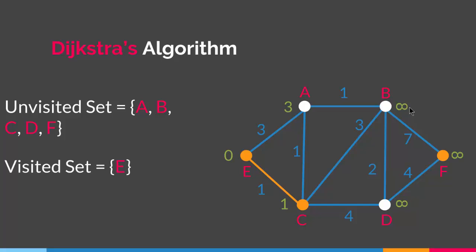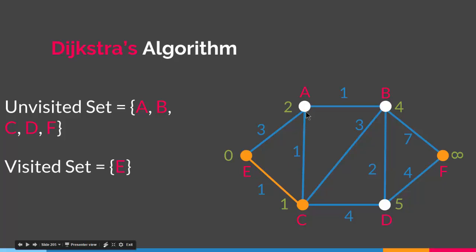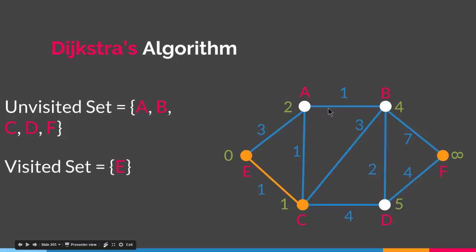We change the values of A, B, and D based on whether their current values are greater than the sum of edges connecting E to them through C. The value of B is infinity and the sum of edges from E to B through C is 1 plus 3 equals 4, so B becomes 4. D becomes 5. The value of A changes from 3 to 2 because going E to C to A gives a sum of 2, which is less than going directly E to A which gives 3. The rule is: when the current value of a vertex is greater than the new path's sum, update it.